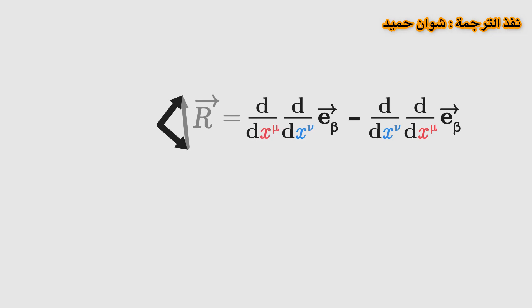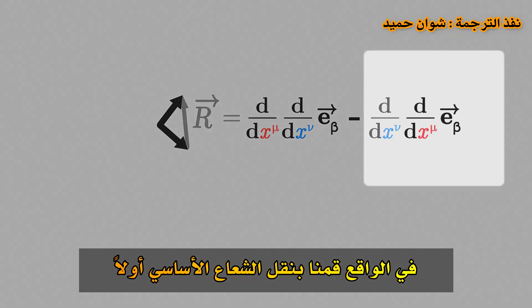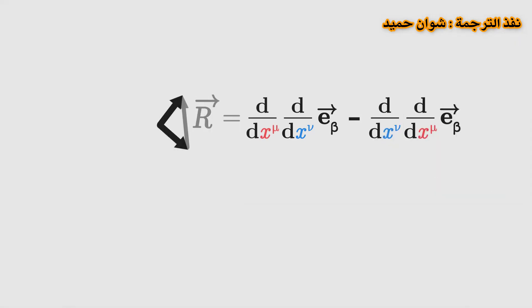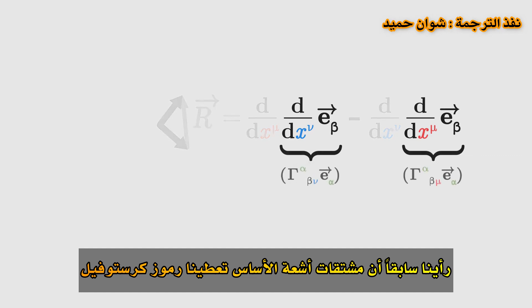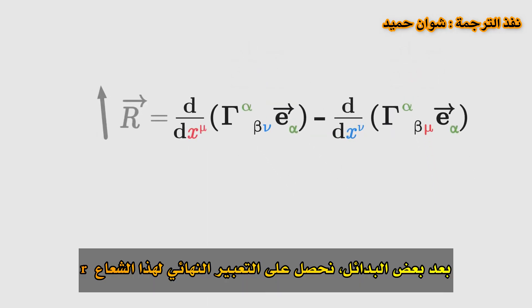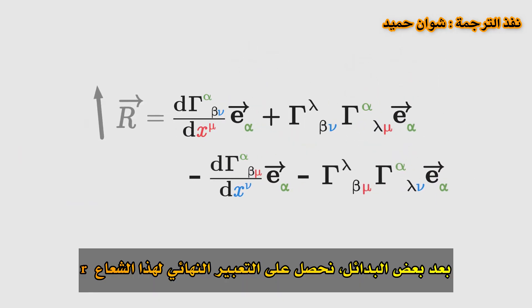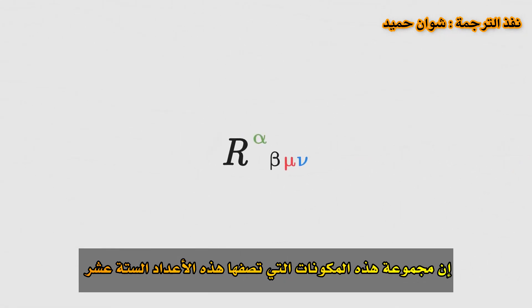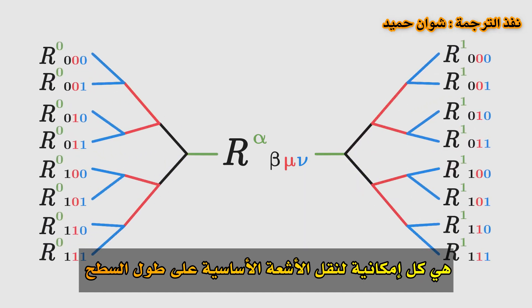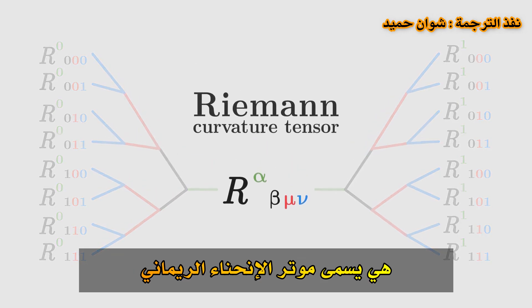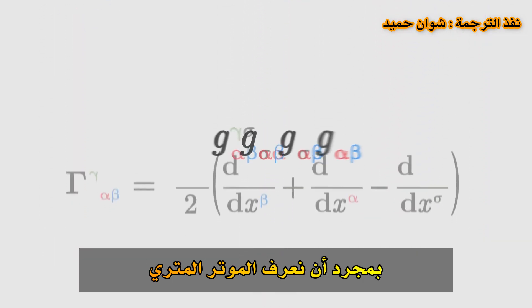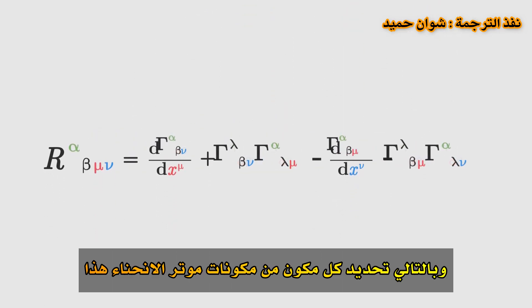The vector R is the difference between two derivatives of the basis vector in opposite orders. Indeed, we transported the basis vector first along the coordinate mu then nu, and then along the coordinates nu then mu. We saw previously that derivatives of basis vectors give us Christoffel symbols. After a few replacements, we get a final expression for this vector R that we can break down into its components. The set of all these components — these 16 numbers that describe each possibility for transporting basis vectors along the surface — is called the Riemann curvature tensor. It fully describes the curvature of a surface. As soon as we know the metric tensor, we can calculate the Christoffel symbols, and hence determine each component of this curvature tensor.